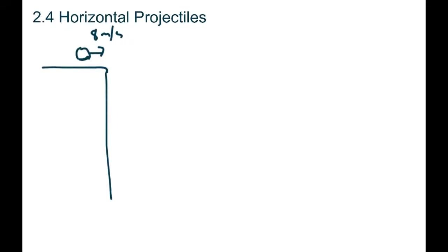Today we're going to start looking at horizontal projectile motion. What's different about these kinds of questions is that we've got two dimensions going on — motion that's moving both vertically and horizontally. The kinds of questions we're going to start with are a little bit easier, where we have something getting thrown off a hill or a cliff, a car going off a cliff, or the top of a building.